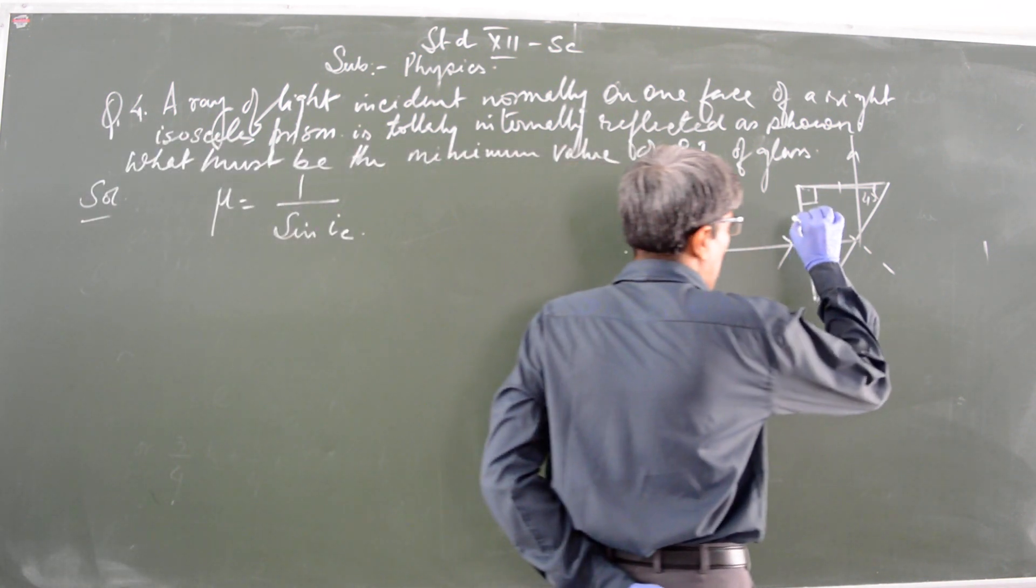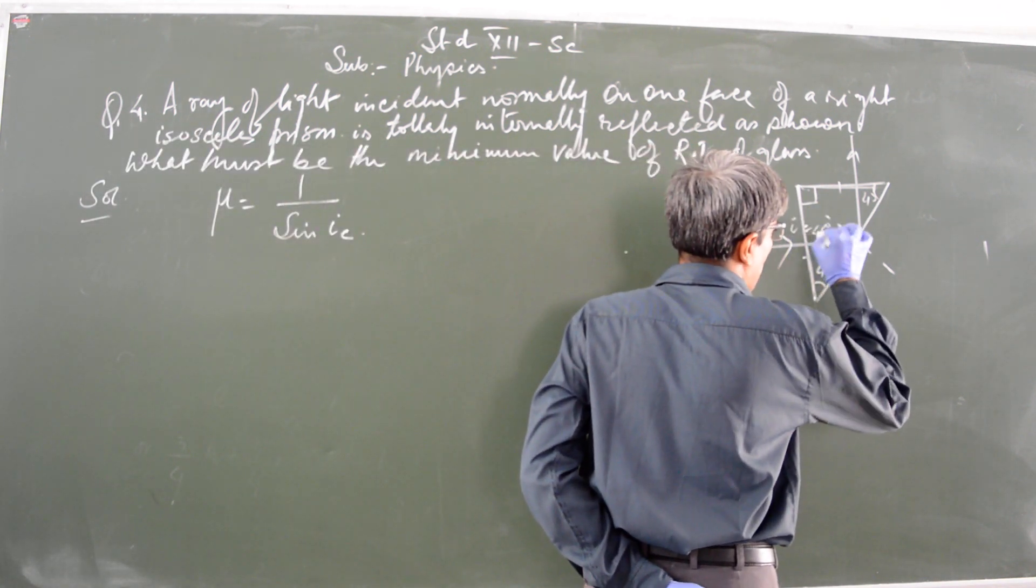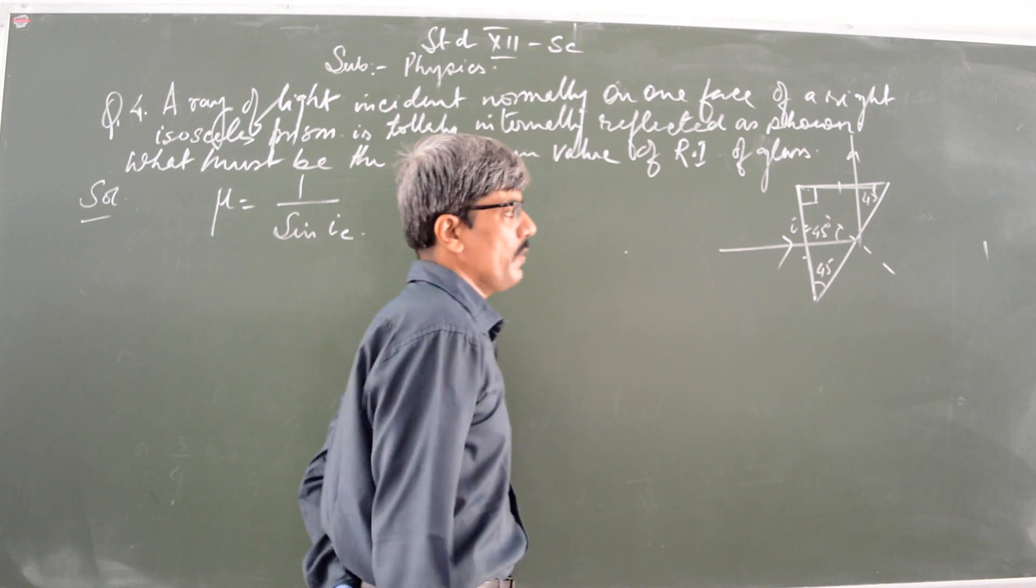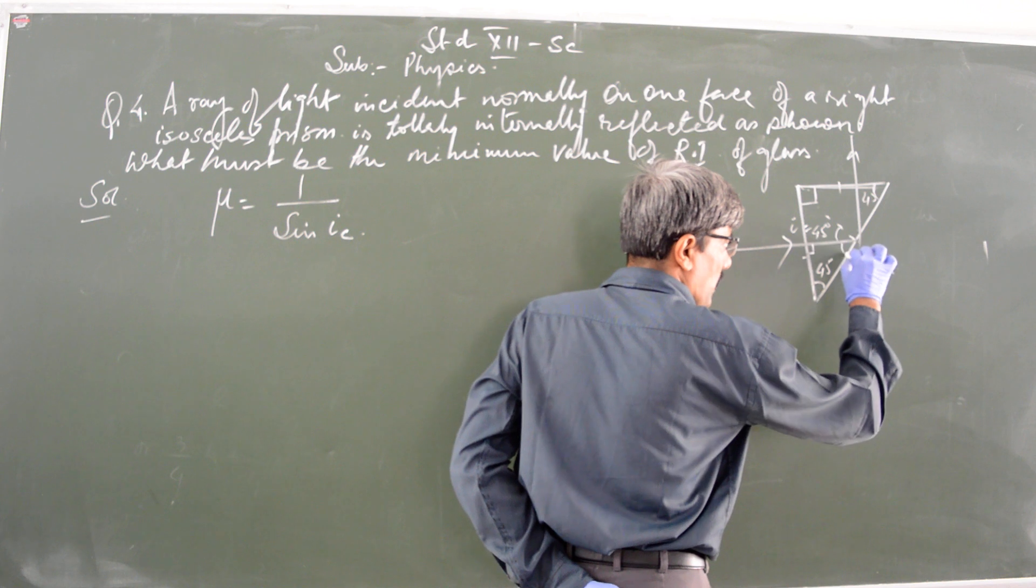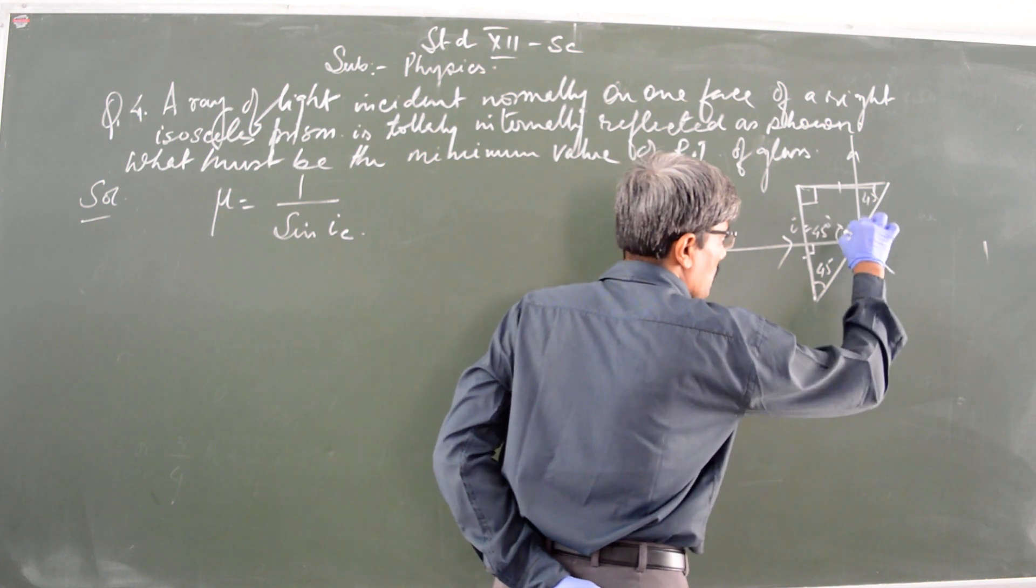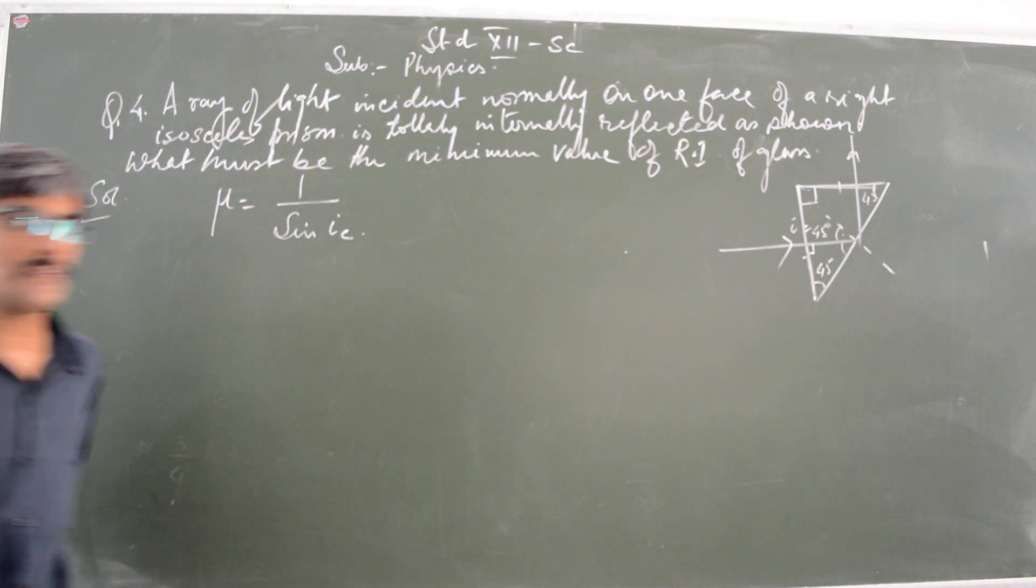In this question, angle of incidence is 45 degrees. From the geometry of the figure: this is 90, this becomes 45, this becomes 45, so this one also becomes 45. 90 minus 45 is 45.